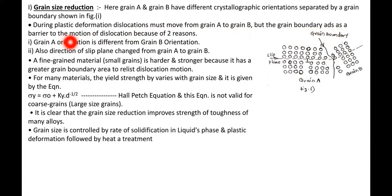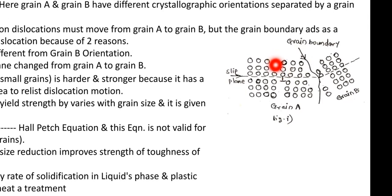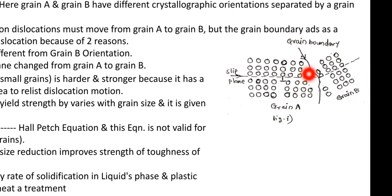The grain boundary acts as a barrier to the motion of dislocation. This is the half plane of the atom — that means this is the edge dislocation. When we apply force, the metal will plastically deform, and the edge dislocation starts moving in this direction. But when they reach the grain boundary, they cannot easily pass from grain A to grain B, because in grain A the atoms are oriented one way and in grain B the orientation is different, creating a big problem for the dislocation to move across.